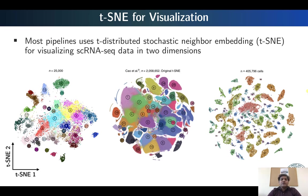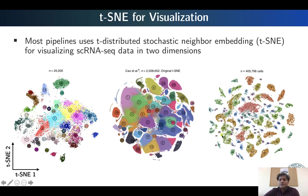T-SNE and UMAP are both the most prominent visualization techniques for single cell RNA sequencing data. In this particular slide you can also see datasets of different sizes visualized in 2D using T-SNE: one dataset contains 25,000 cells, another used around 400,000 cells for the mouse atlas, and in one example 2,000,000 cells are being visualized in 2D with the help of this T-SNE algorithm.